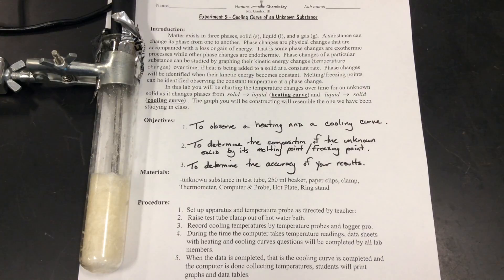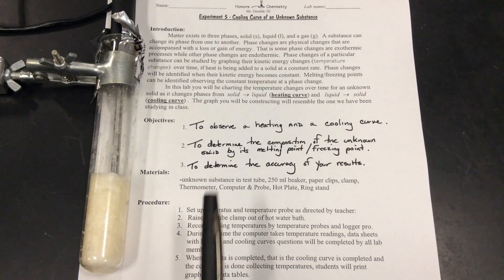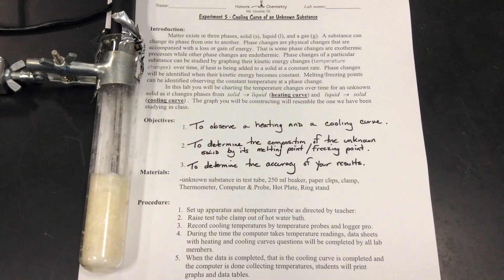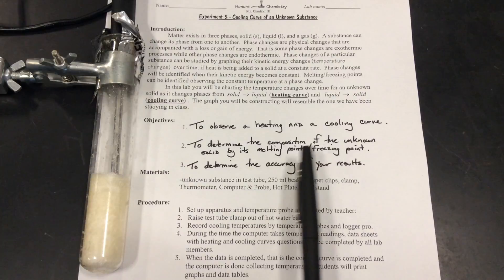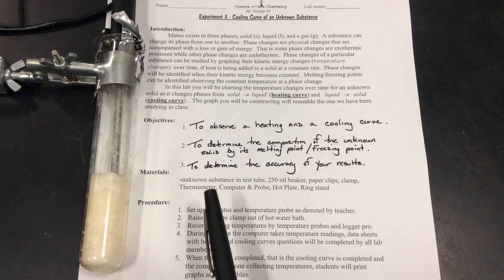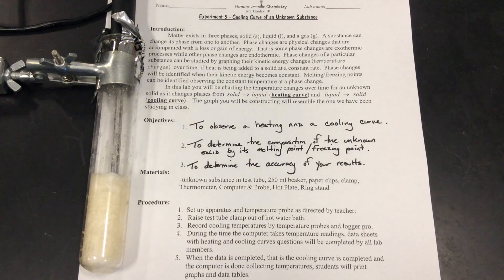The second part of this, once we have graphed this, once the computer has graphed it in real time, we're going to mark up that data and we're going to determine the composition of the unknown by figuring out what its melting and freezing point temperature is. That's the temperature that stays constant, that flat line where the kinetic energy doesn't change. We're going to get that right from the graph, and once we get the melting and freezing point, we're going to go to a list of known values and see where this substance is closest to. Then we'll do a percent error, which we all know is measuring the accuracy of our results.